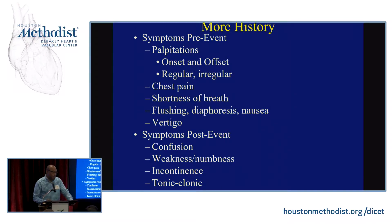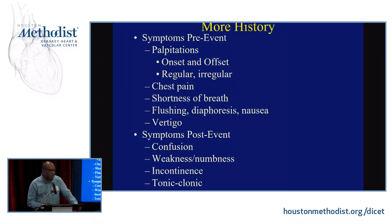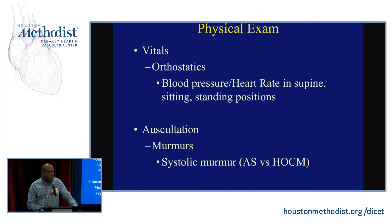More history includes pre-event and post-event details: did they have palpitations, onset and offset, a regular versus irregular rhythm, chest pain, shortness of breath, flushing, or vertigo? Post-event symptoms include confusion, weakness or numbness, incontinence, or tonic-clonic seizure activity.